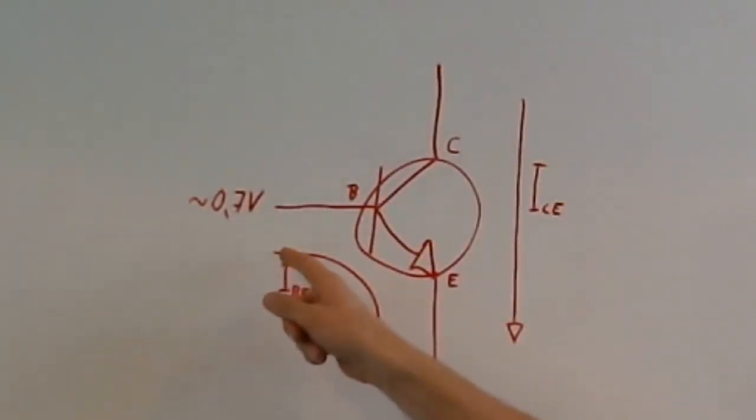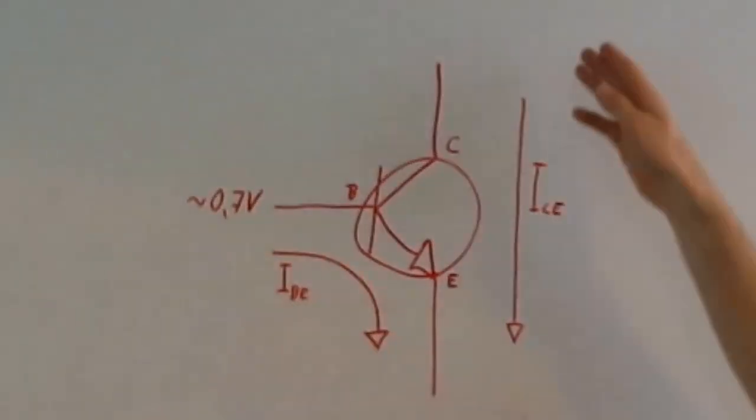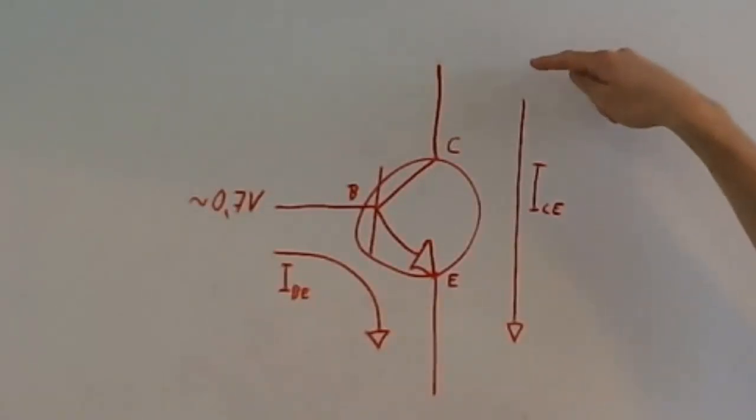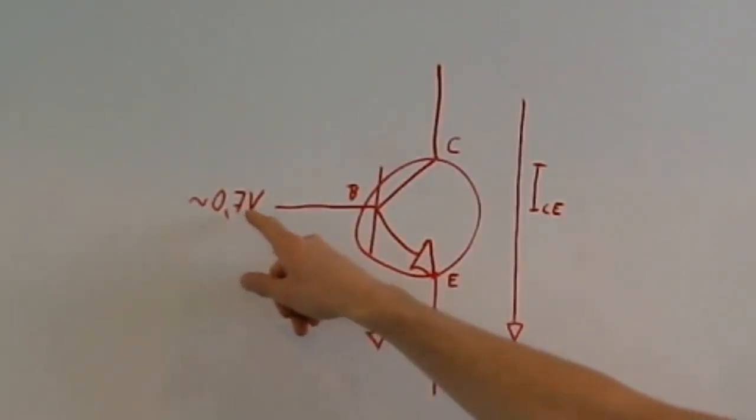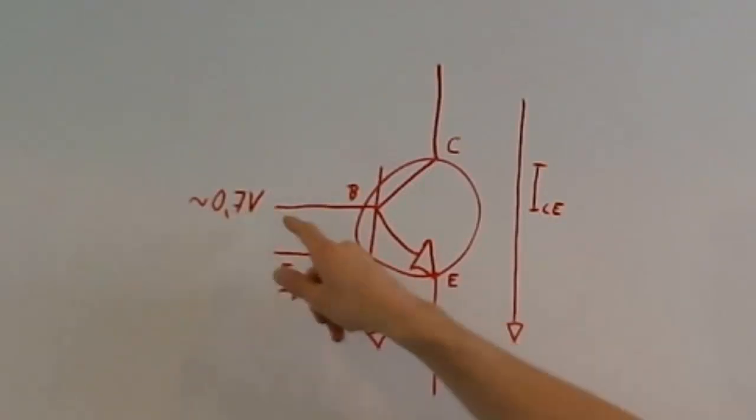If you have a small current going from the base to the emitter, here, you turn the transistor on and you allow for a bigger current to go from the collector to the emitter, here. And to turn the transistor on you need about 0.7V from the base to the emitter.